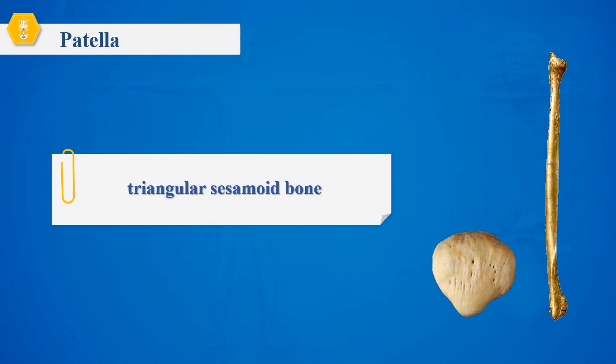Patella. The patella is the largest sesamoid bone in the human body, located in front of the knee joint, encased in the quadriceps tendon, slightly triangular, upper wide and lower narrow, rough in front and smooth in back.